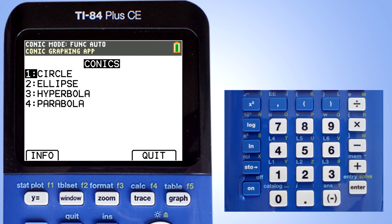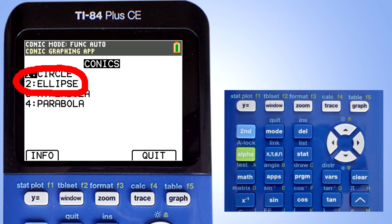The types of conics that you can graph in the Conics app are circles, ellipses, hyperbolas, and parabolas. Go down to number 2, ellipse, and press the enter key.